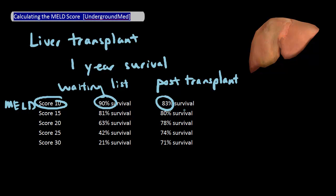On the flip side, for patients with high MELD scores, such as a score of 30, you see that patients on the waiting list have a very poor survival, or 21%, compared to those who do get a transplant, which is 71%.